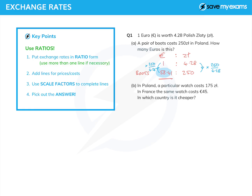The second question: in Poland, a particular watch costs 175 zloty, and in France the same watch costs 45 euros. In which country is it cheaper? Well, all we need to do is decide whether to convert one into zloty or one into euros.